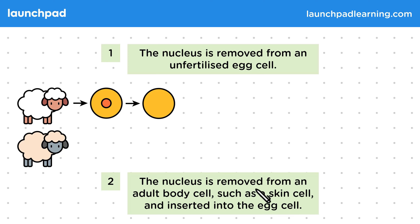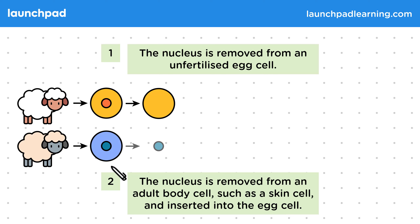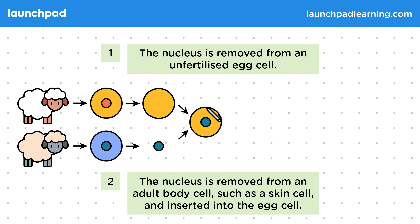The nucleus is removed from an adult body cell, such as a skin cell, and inserted into the egg cell. We take the nucleus out of this adult body cell and place it into the empty egg cell, so we now have one cell made up of parts from two different cells — the empty egg cell now has a new nucleus from the adult body cell.